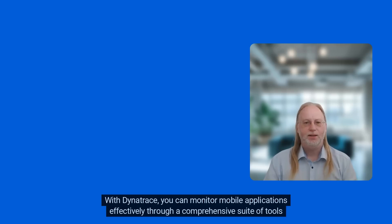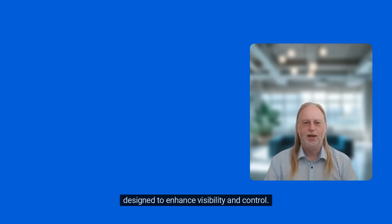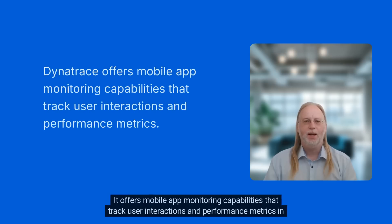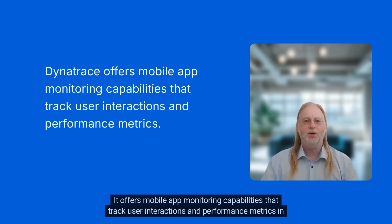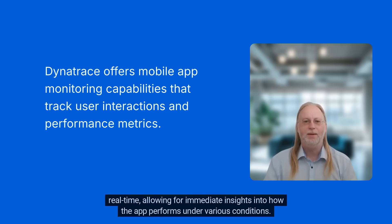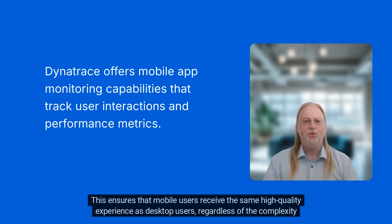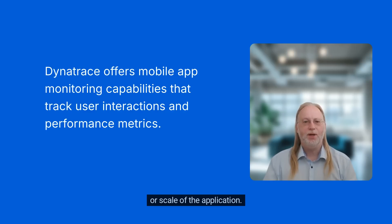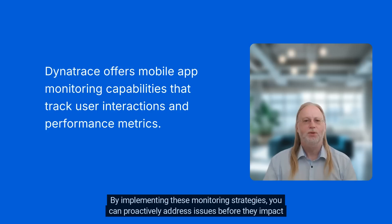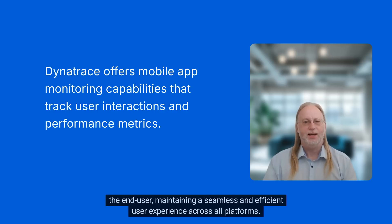With Dynatrace, you can monitor mobile applications effectively through a comprehensive suite of tools designed to enhance visibility and control. It offers mobile app monitoring capabilities that track user interactions and performance metrics in real-time, allowing for immediate insights into how the app performs under various conditions. This ensures that mobile users receive the same high-quality experience as desktop users, regardless of the complexity or scale of the application. By implementing these monitoring strategies, you can proactively address issues before they impact the end-user, maintaining a seamless experience across all platforms.